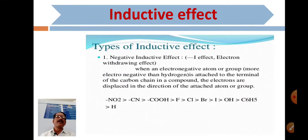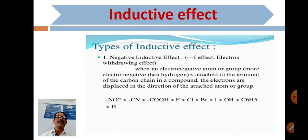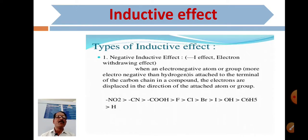There are two types of inductive effect based on electron-donating and electron-withdrawing nature. The negative I effect (−I): when an electronegative atom or group, more electronegative than hydrogen, is attached to the terminal of the carbon chain, the electrons are displaced in the direction of the attached atom or group.